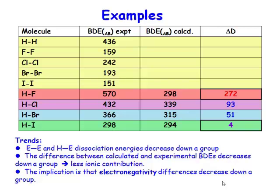The difference in electronegativity must be getting smaller because the difference between the predicted and the experimentally found bond dissociation energies is getting smaller.